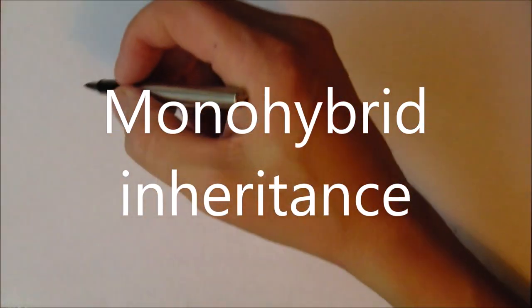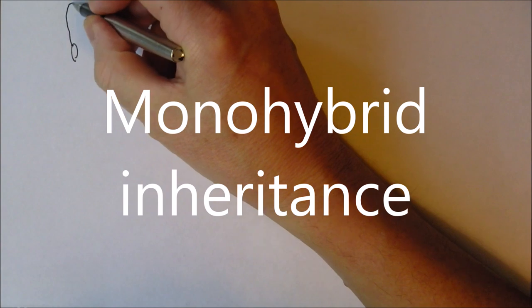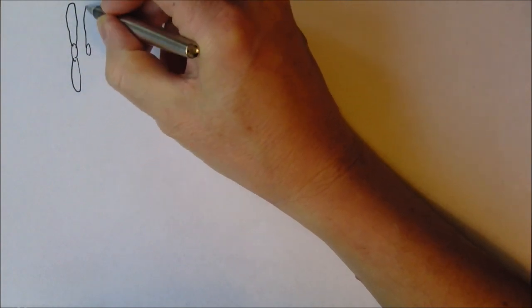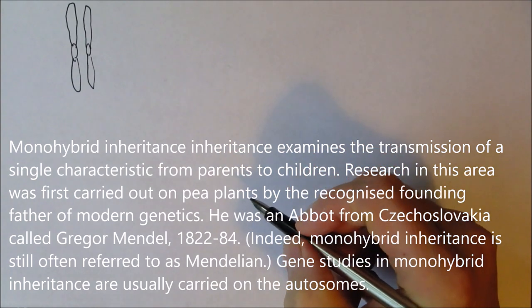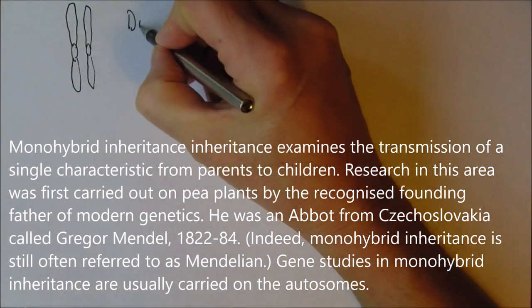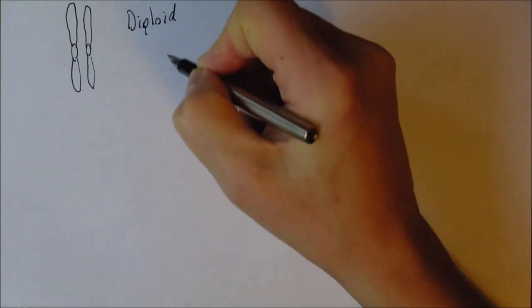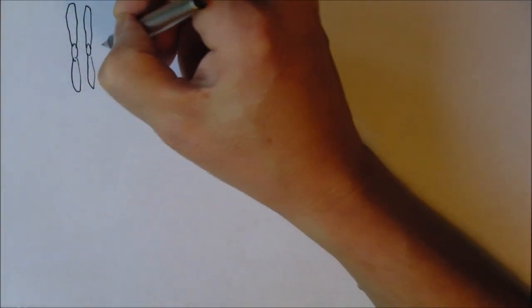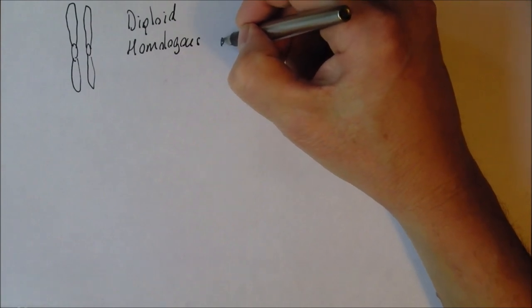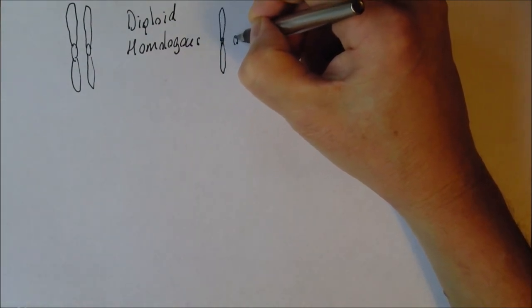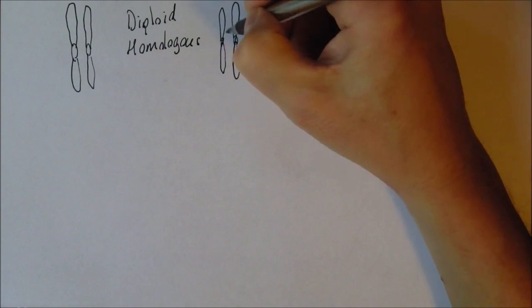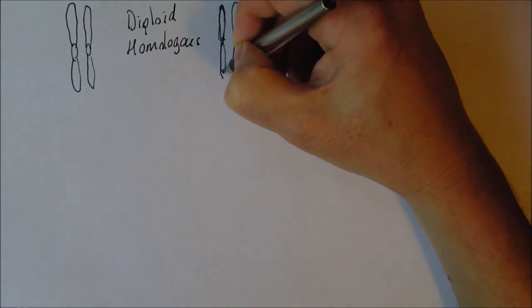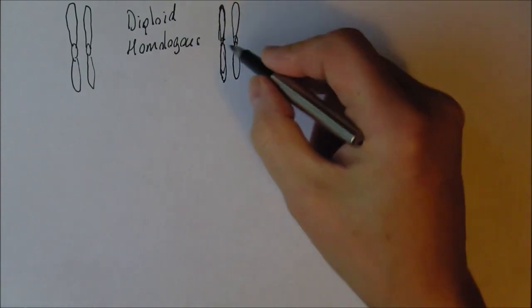In the diploid cell, the chromosomes occur in homologous pairs — similar looking pairs of chromosomes. So this cell would be diploid with a homologous pair of chromosomes. This is a diploid cell that might be from a mother, for example. We also have another pair of chromosomes from someone else who might be the dad. Again, these are a homologous pair — they should look the same — and it's another diploid cell.